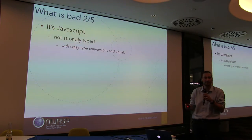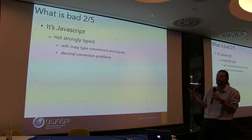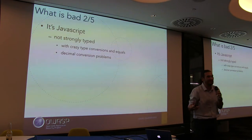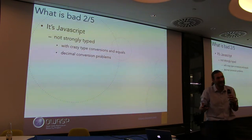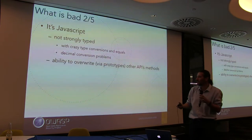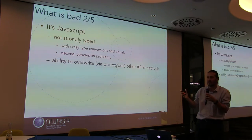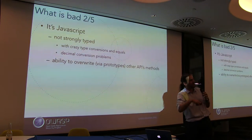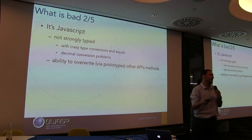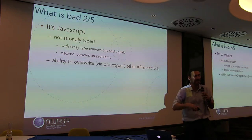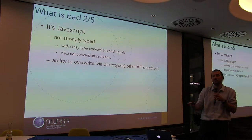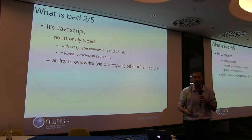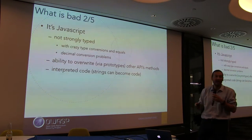There are some crazy type conversions. That decimal conversion I had the other day — really, in 2016 you can't handle a decimal? Nope, you can't. You can override by prototypes and other APIs, which is even crazier. If you thought Java was bad because you could override classes along the classpath, Node.js takes that to a completely new level — every single npm import can override everything else that came along.